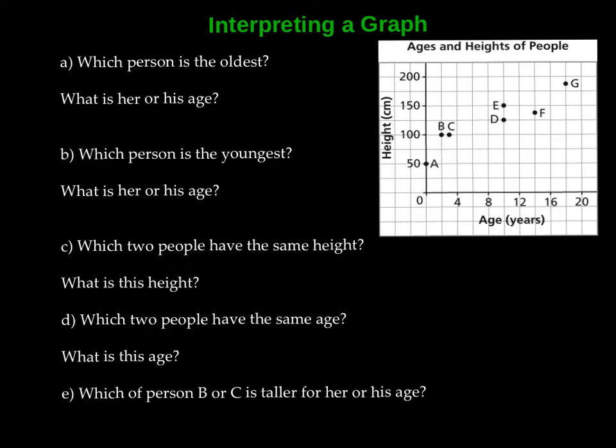Okay, so we've got a few questions here. Which person is the oldest? Okay, so we want to look over here on our x-axis, and that's our age axis, and we want to see which person is the oldest. Okay, so that is person G, and so we look for person G here and look down. How old are they? Well, that tells you that they are 18 years old. Okay, so person G is 18.